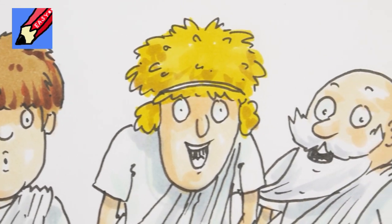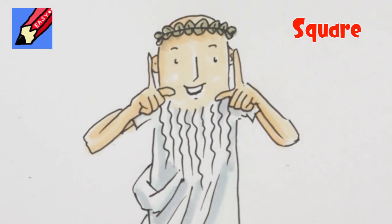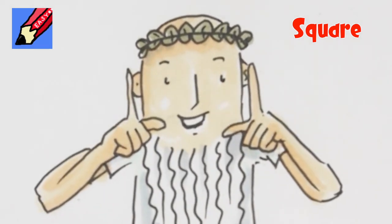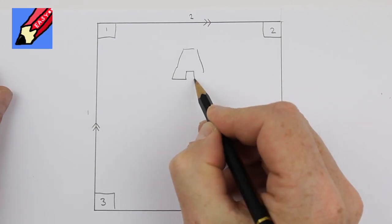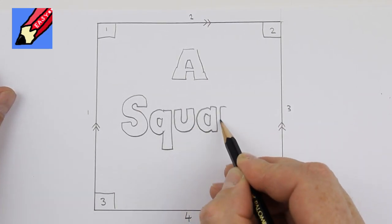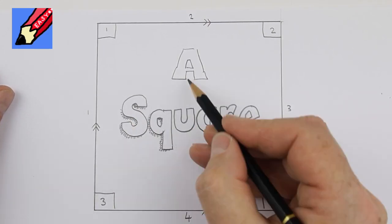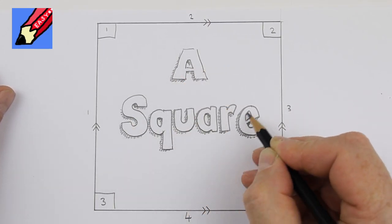It looks sort of, square is the word you are looking for, said Euclid. When all the lines are of equal length and at 90 degrees to each other, we call it a square.